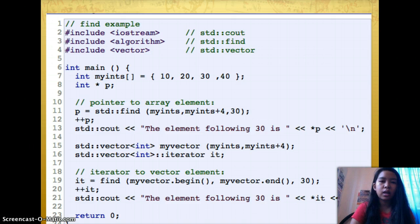Int pointer p, pointer to array elements. p equals std::find myints, myints plus 4, and 30.